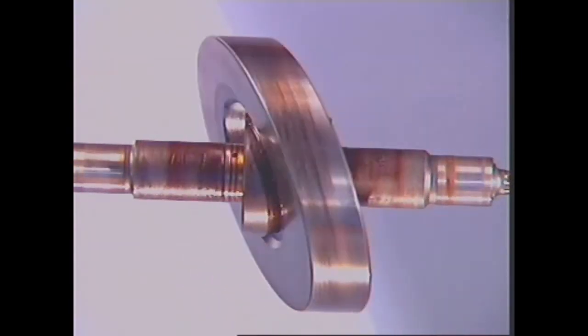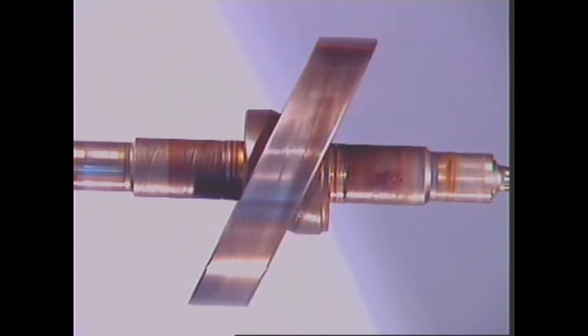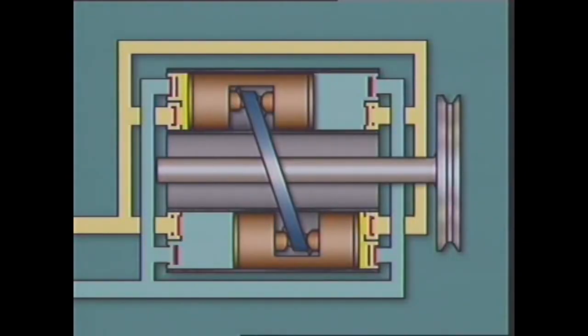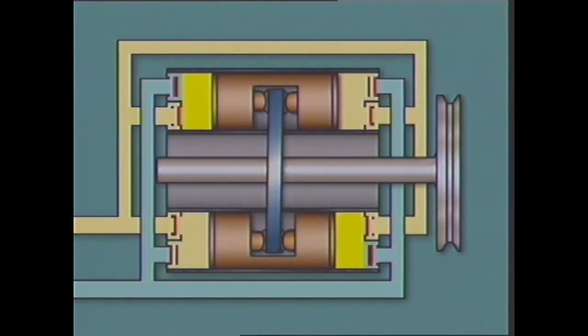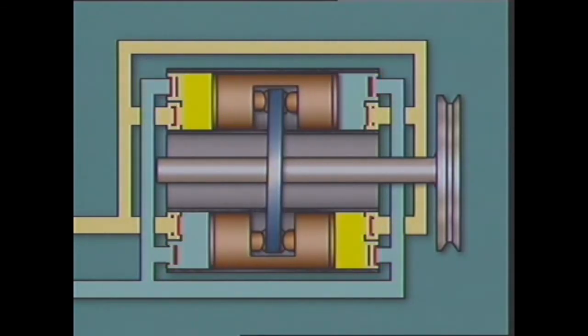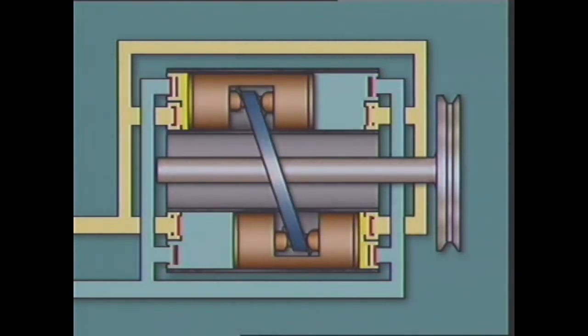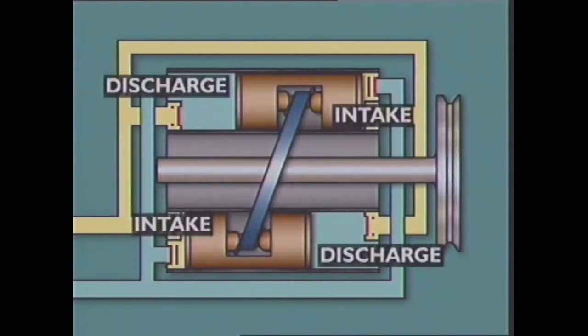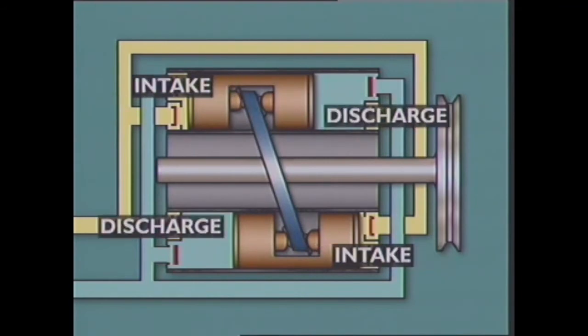Rotation of the drive shaft causes the outer edge of the swash plate to constantly change its linear position. The pistons are connected to the outer edge of the swash plate by swiveling ball joints, and the action of the plate and ball joints continually moves the pistons back and forth in the cylinders. As the volume above a piston increases, refrigerant is drawn into the cylinder through the inlet reed valves. When the volume above a piston reduces, refrigerant is forced out through the discharge reed valves. As one end of the cylinder is on the intake stroke, the other end is on the discharge stroke — this dual pumping action occurs in each cylinder during each revolution.